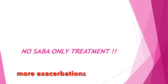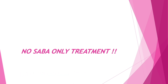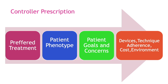In children with mild asthma, it is always recommended to give ICS whenever you are giving an SOS SABA. The prescription will depend on the preferred treatment at an individual or population-based level. The patient's phenotype should ideally determine how we manage them, taking into account the patient's own goals, concerns about inhaler type, medication preferences, devices, technique, adherence, cost, and environment.